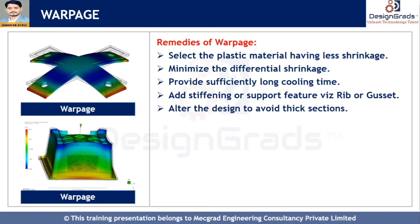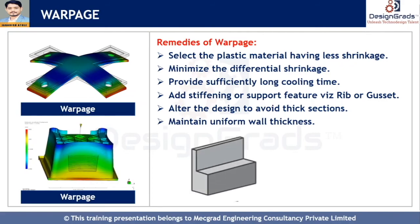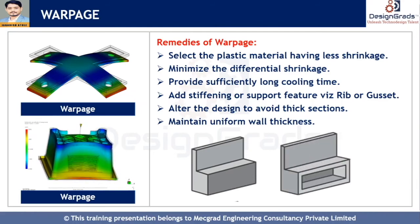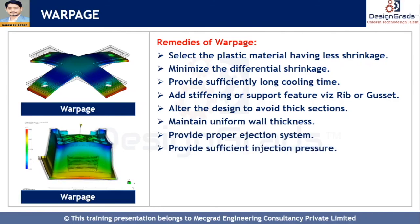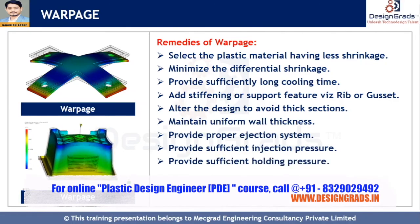Alter the design to avoid thick sections and reduce the thickness of any features that intersect with the main surface. Maintain uniform wall thickness so it will solidify uniformly. As shown in this diagram, a part with non-uniform thickness can be made uniform by coring out. Warpage can be reduced or eliminated by providing a proper ejection system and by providing sufficient injection pressure and sufficient holding pressure.